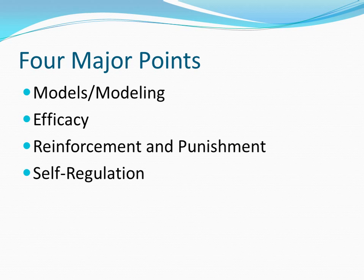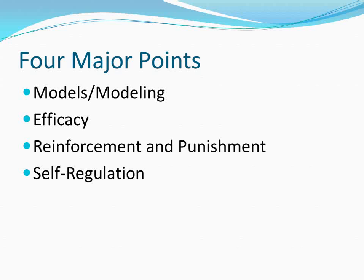There are four major points to Social Cognitive Theory: models and modeling of behavior; efficacy — including self-efficacy, collective efficacy, resilient efficacy, and teacher self-efficacy; reinforcement and punishment, which is different from behaviorism but has a similar concept; and self-regulation, which is what happens at the end of Social Cognitive Theory when the modeled behavior becomes the person's own behavior that they take control over.